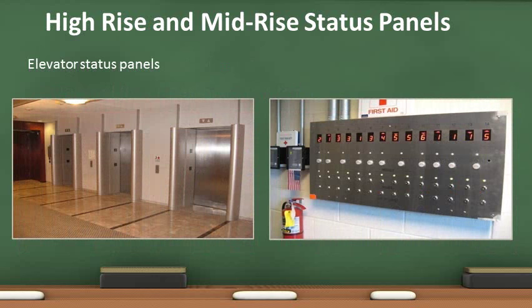Another panel in the fire control room is the elevator status panel. It indicates where the individual elevators are located. In a fire situation, if the fire is located on an upper floor, all the elevators should be at the ground floor level. If the fire is on the ground floor, the elevators should be on an alternate floor.